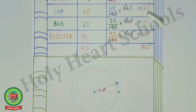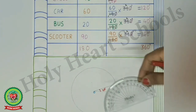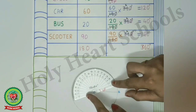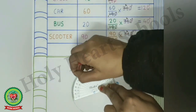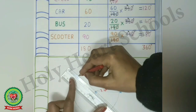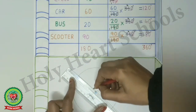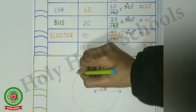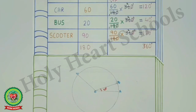The next angle is 120 degrees. Now the base line is OB, so place the protractor center at point O and match the base line with OB. Mark 120 degrees with a dot and join this dot with point O. This new line OC becomes the new base line of the pie graph.